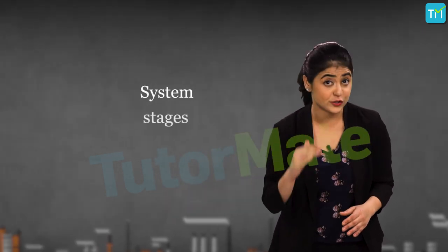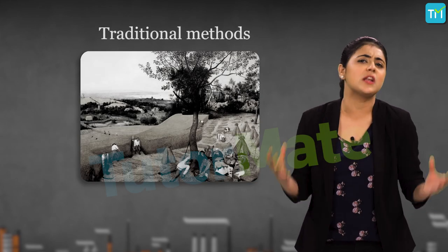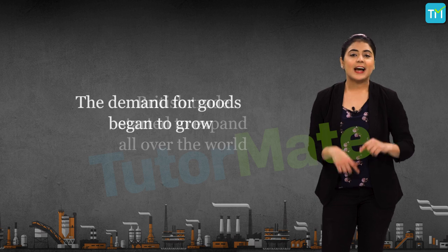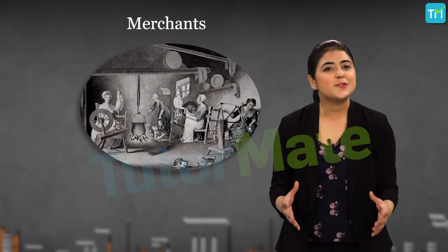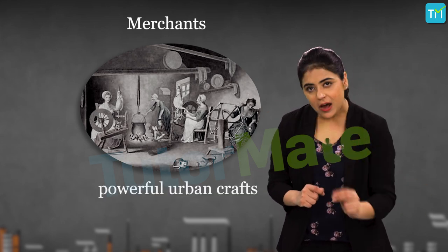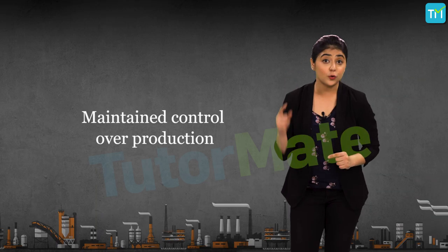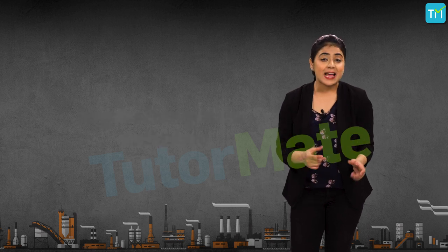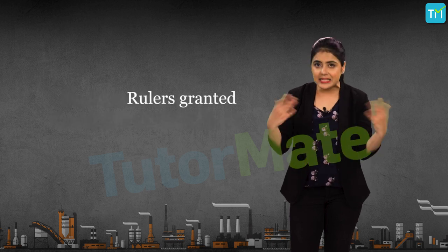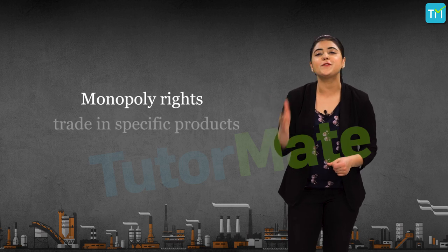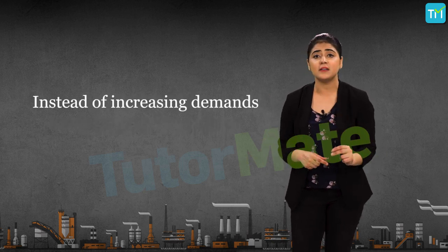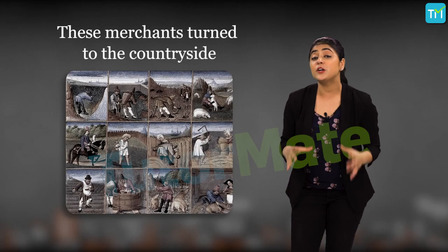Before industrialization, production was done in stages in rural areas by traditional methods. With British sovereignty's acquisition of colonies in different parts of the world, British trade expanded and demand for goods began to grow. But merchants could not expand production within the towns because of powerful urban crafts and trade guilds — associations of producers that trained craftsmen, maintained control over production, regulated competition and prices, and restricted entry of new people into the trade. Since rulers granted these guilds monopoly rights to produce and trade in specific products, it was difficult for new merchants to enter the trade, so these merchants turned to the countryside.